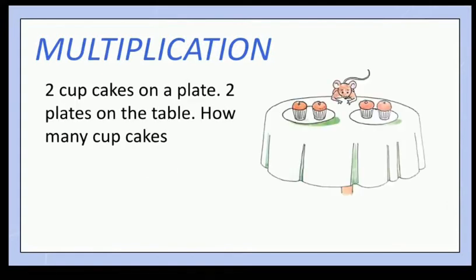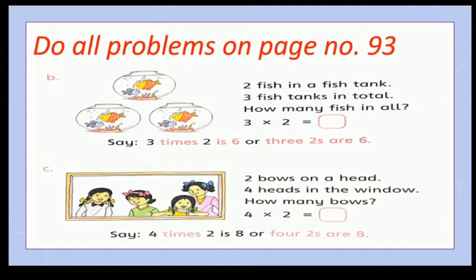As you see here is two cupcakes on a plate and two plates on the table. How many plates? One, two, two plates on the table. How many cupcakes? Two cupcakes on a plate, two plates on the table. How many cupcakes? Two is added two times can be written two multiply by two is equal to four. When we see this sign we say times, two times two is four, or two twos are four. Now open page number ninety-three and do part B and C in your book.